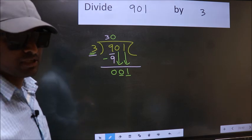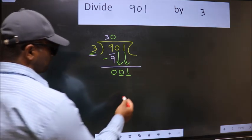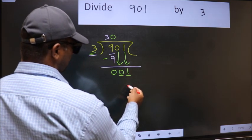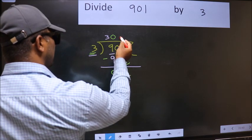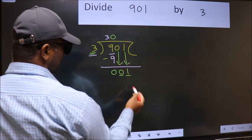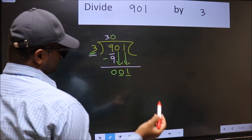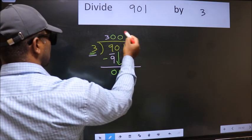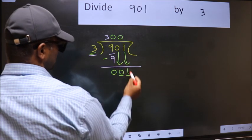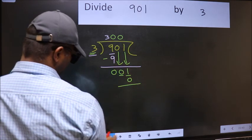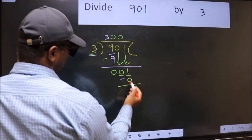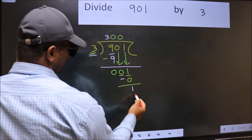You should think which number should we take here. If I take 1, we will get 3, but 3 is larger than 1. So what we should do is we should take 0. So 3 into 0, 0. Now we should subtract 1 minus 0, 1.